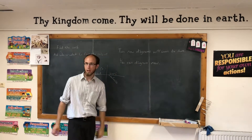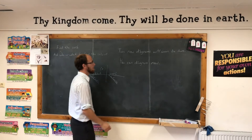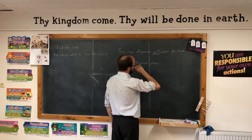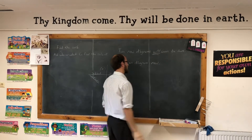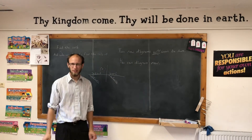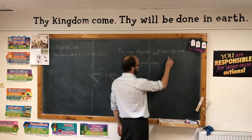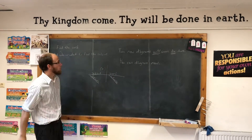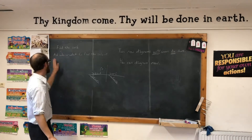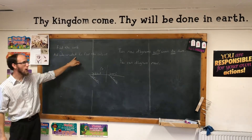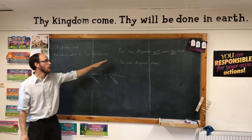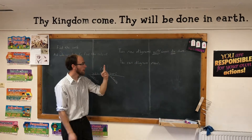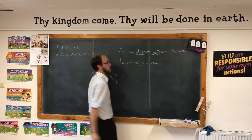Two new diagrams will soon be here. What is the verb? Will be — soon is interrupting it, but the verb is will be. And the next step is to ask who or what to find the subject. Who or what will be? Diagrams. Excellent — diagrams will be.